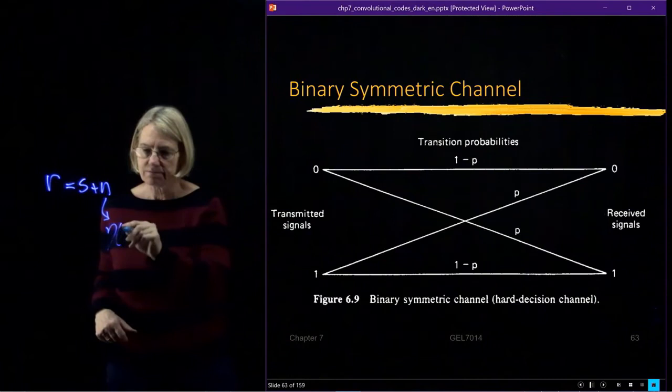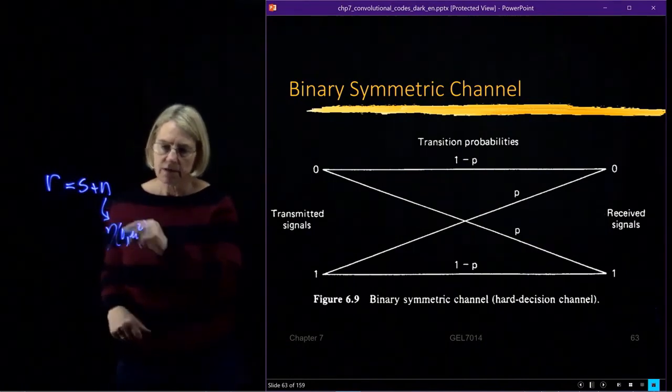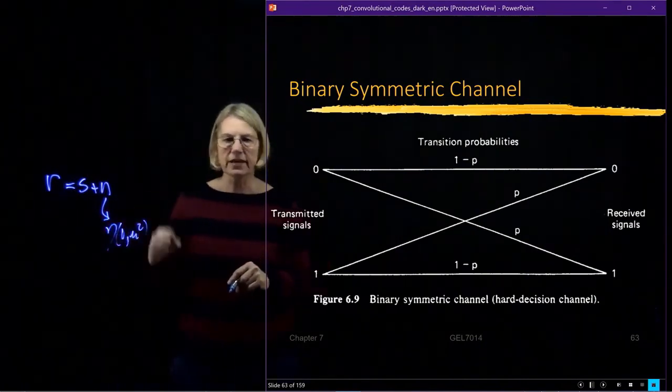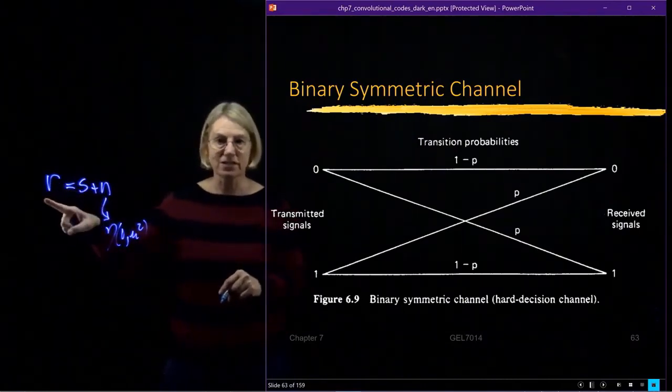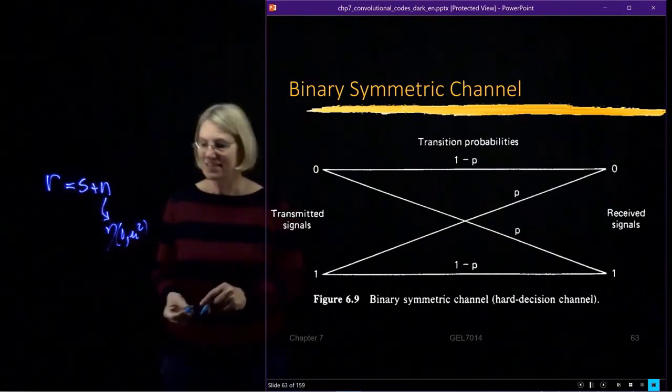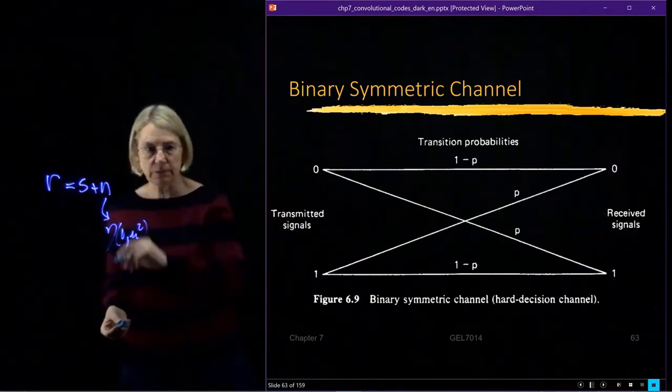Instead, what I'm doing is I've already made the decision. I quantized this after I compared it to a threshold. And in that case, this whole representation could be based on, let P be the probability that I mistake a 0 for a 1.